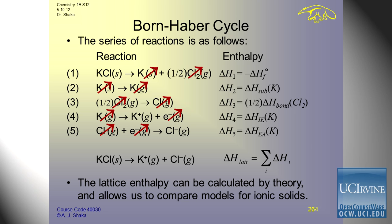Then we take the potassium metal in the gas phase and remove an electron — that's the ionization energy of potassium, which can be measured quite well. It's a fairly big number because taking an electron off the atom is not so easy. And then we have to take chlorine and add an electron to the atomic chlorine — it loves to get an electron and complete that octet. That's quite energetic and can also be measured. That's the electron affinity of the chlorine atom.